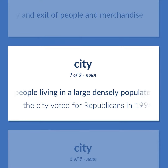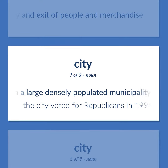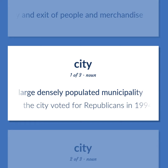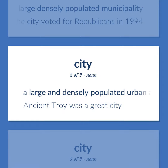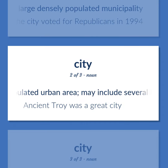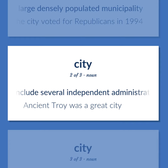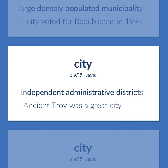People living in a large densely populated municipality. The city voted for Republicans in 1994. A large and densely populated urban area may include several independent administrative districts. Ancient Troy was a great city.